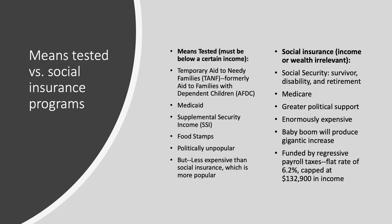Social Security and Medicare are social insurance programs — once you hit 65, you're eligible regardless of wealth. Even Jeff Bezos or Elon Musk are eligible for Social Security and Medicare. These programs are much more popular because they're for everybody, but they are enormously expensive. They're going to get more expensive because of the aging baby boom generation. They're funded by regressive payroll taxes at a flat rate of 6.2%, meaning even the richest people pay the same tax rate. We could make them progressive, but we don't — they're funded by a flat tax.